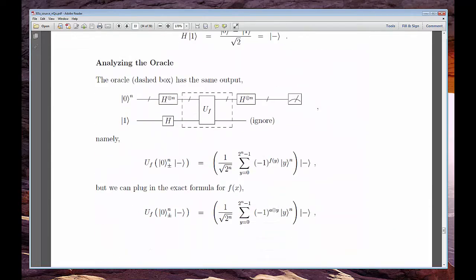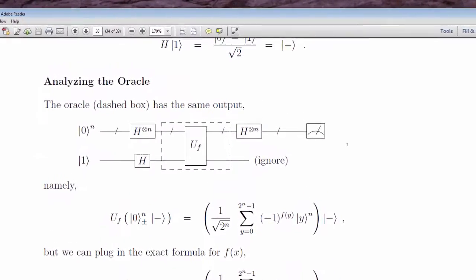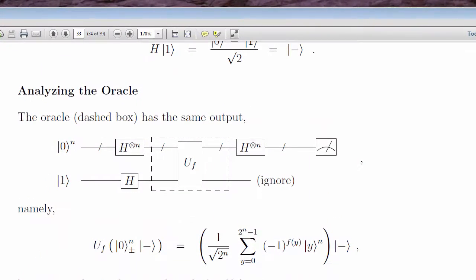Meanwhile, the quantum solution only requires one evaluation of the oracle. It's constant. This is a true speed-up, even if not exponential. It represents the first fair and practical separation between quantum and classical computing.